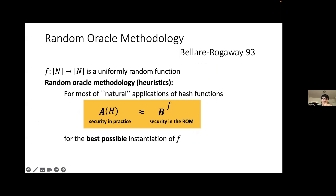In this model, they use an idealized hash function: a function f which is an end-to-end uniformly random function chosen at the beginning of a game. The random oracle methodology says that for most natural applications of hash functions, the best security you can get in practice with the best possible instantiation of the hash function is roughly equal to the security you can get in the random oracle model, where the adversary can only interact with the random oracle in a black-box way.